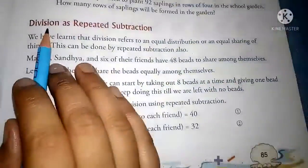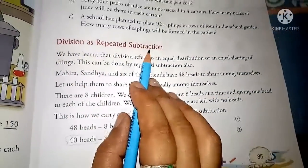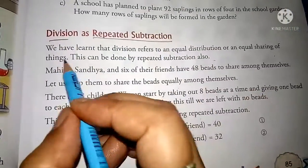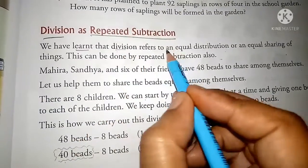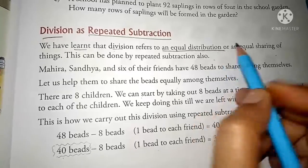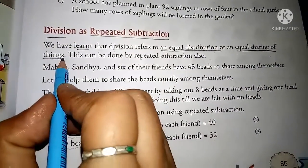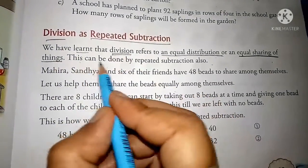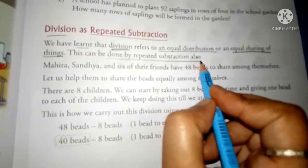So our first topic is division as repeated subtraction. We have learned that division refers to an equal distribution. This can be done by repeated subtraction also.